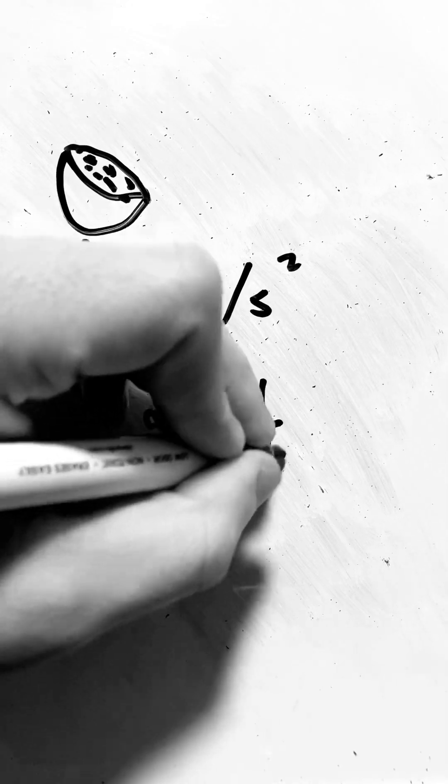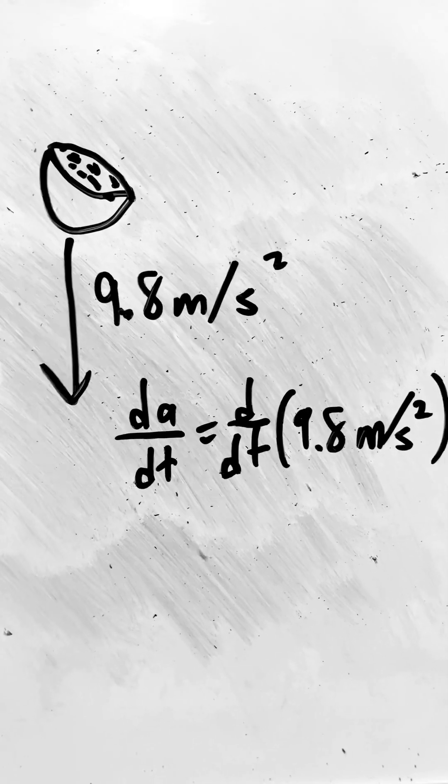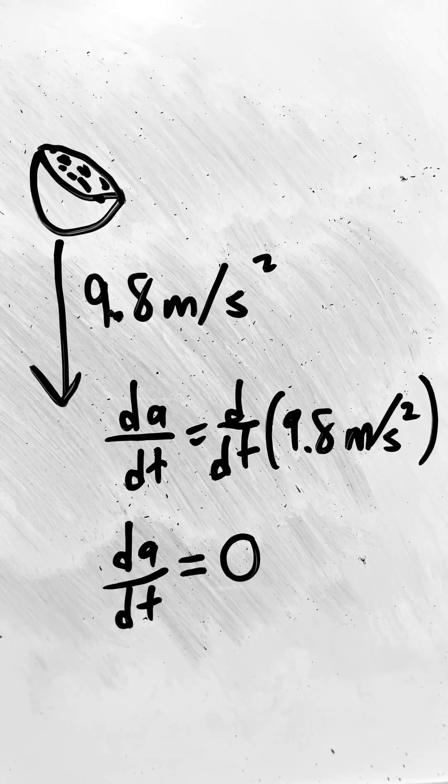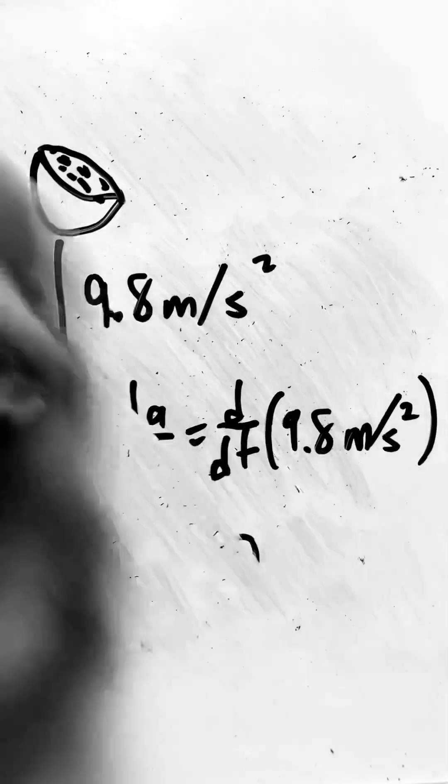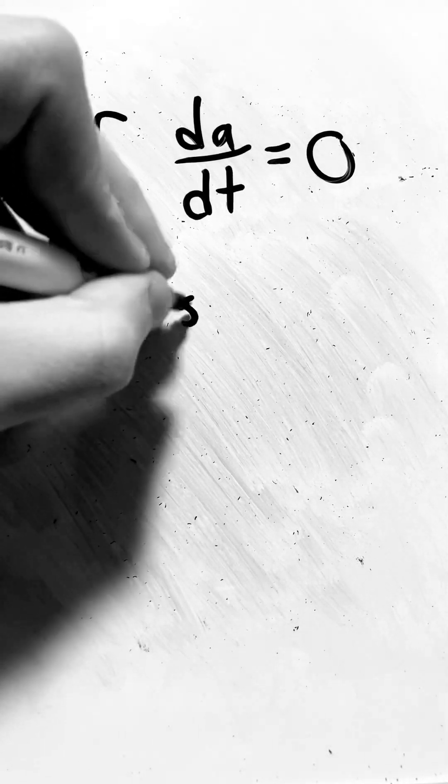Well, we know that the acceleration due to Earth's gravity is 9.8 meters per second squared. If we take its derivative, which is the derivative of a constant, we find that the jerk is equal to zero. Now, since the jerk is the third derivative, we know that any derivatives after it will also be zero.